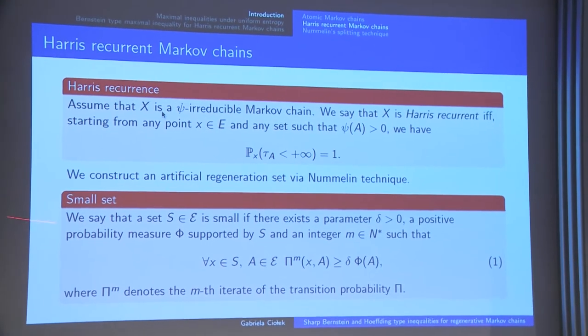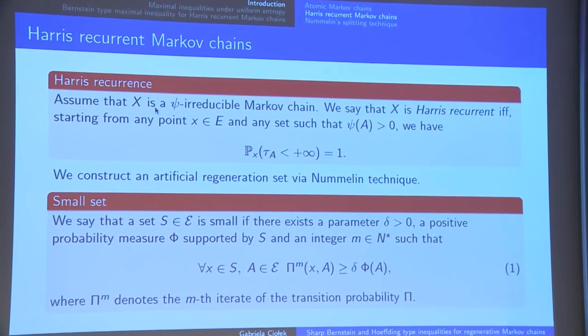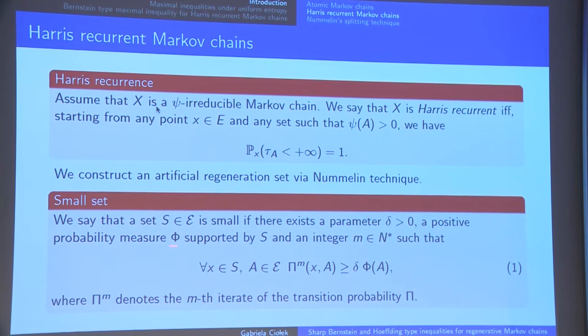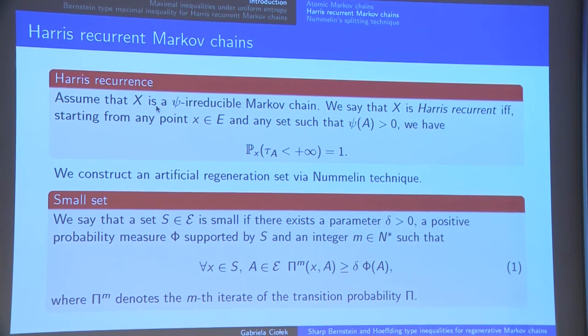We say that S is a small set if it satisfies the minorization condition, which is a uniform bound from below on the transition probabilities.